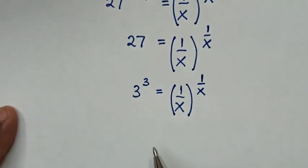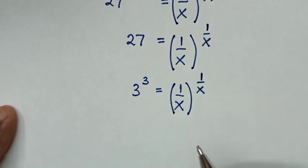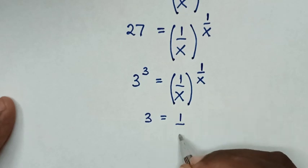We will compare the base of 3 equals 1 over x, and power of 3 equals power of 1 over x. So 3 equals 1 over x.